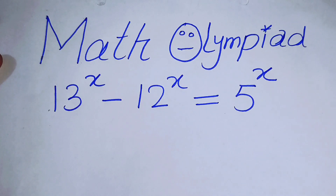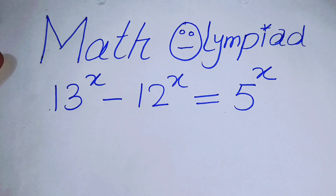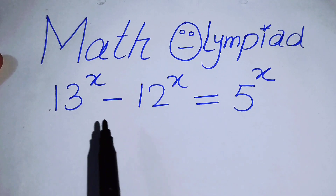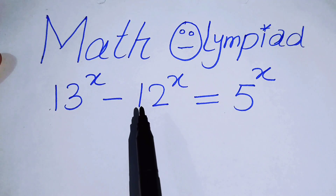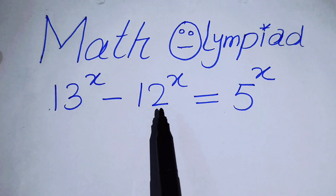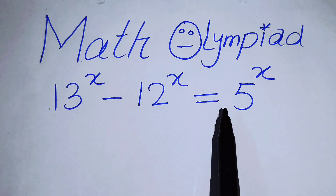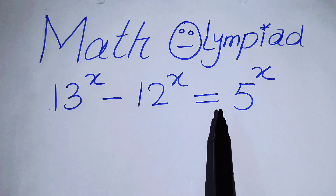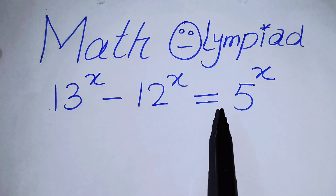Hello everyone, welcome back to the Map of Mathematics. In this video we are going to solve this nice algebra problem: 13 to the power of x minus 12 to the power of x is equal to 5 to the power of x, and we will solve this problem for the value of x.